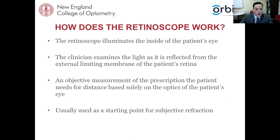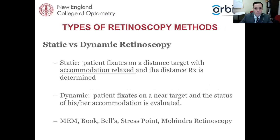How does retinoscopy work? The retinoscope illuminates the inside of the patient's eye. The clinician examines the light as it's reflected from the external limiting membrane of the patient's retina. An objective measurement of the prescription the patient needs for distance, based solely on the optics of the patient's eye, is what we're doing — and it's usually used as a starting point for subjective refraction. How we perceive that reflected light is how we determine the refractive error.